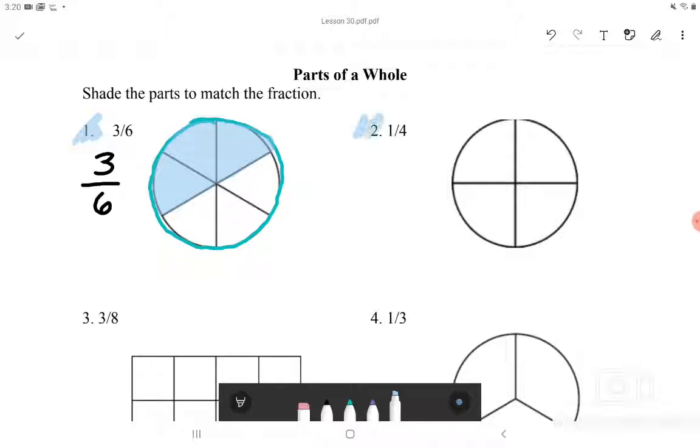I will also do number 2. Number 2 says 1 over 4. Now instead of 6, now there is 4 in the bottom. And that shows how many pieces this shape is divided into, which is 4. 1, 2, 3, 4. We are going to shade one part of it, just like the top number says. So I am going to shade in this part, this much. And this will be matching the fraction.